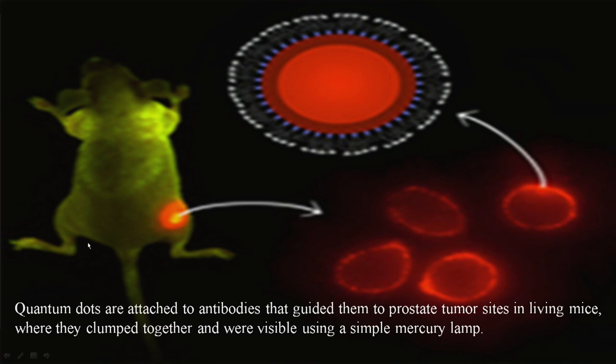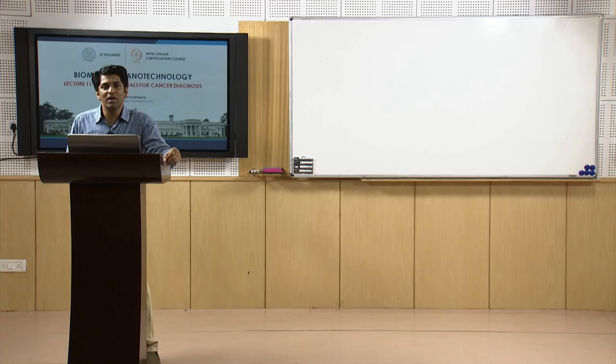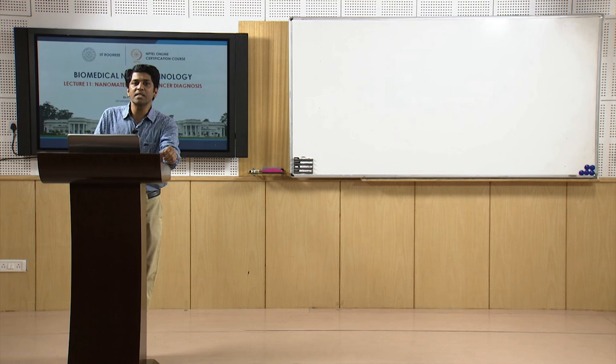In another example, quantum dots attached to antibodies specifically bind to prostate tumor sites in living mice, clamp together, and are visible under a simple mercury lamp. They injected these quantum dots which specifically bind to the prostate cancer, and when you apply light, it gives a fluorescent signal — making it easy to diagnose cancer in the mouse model.